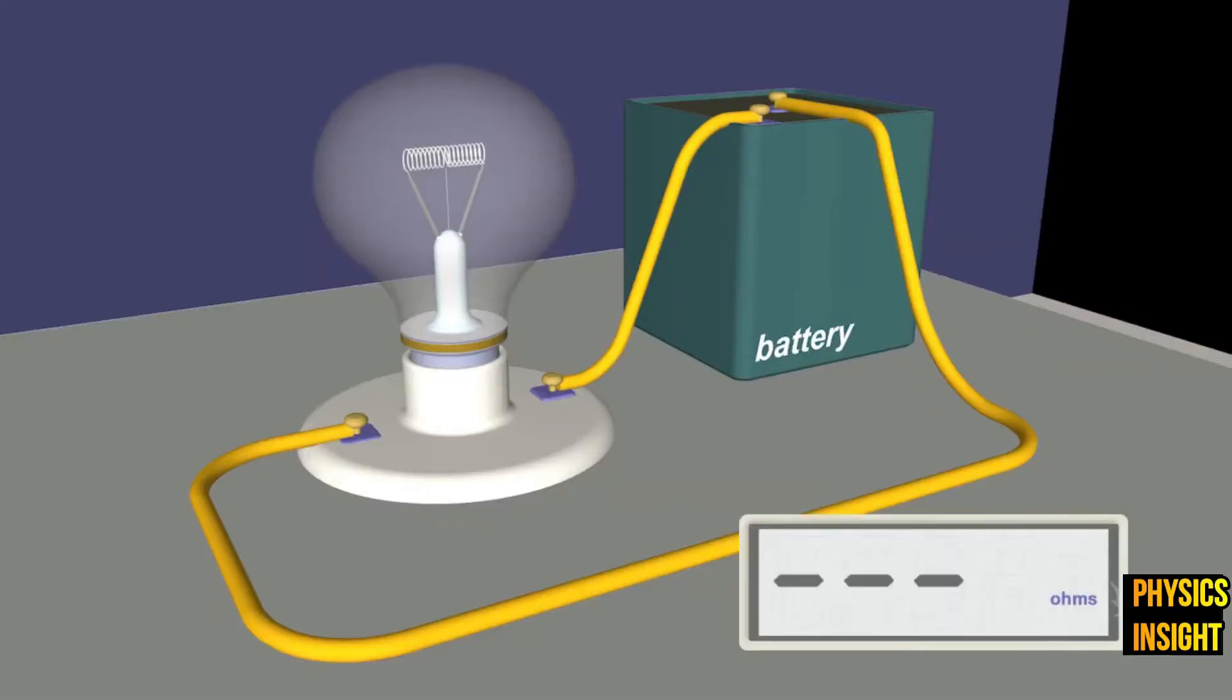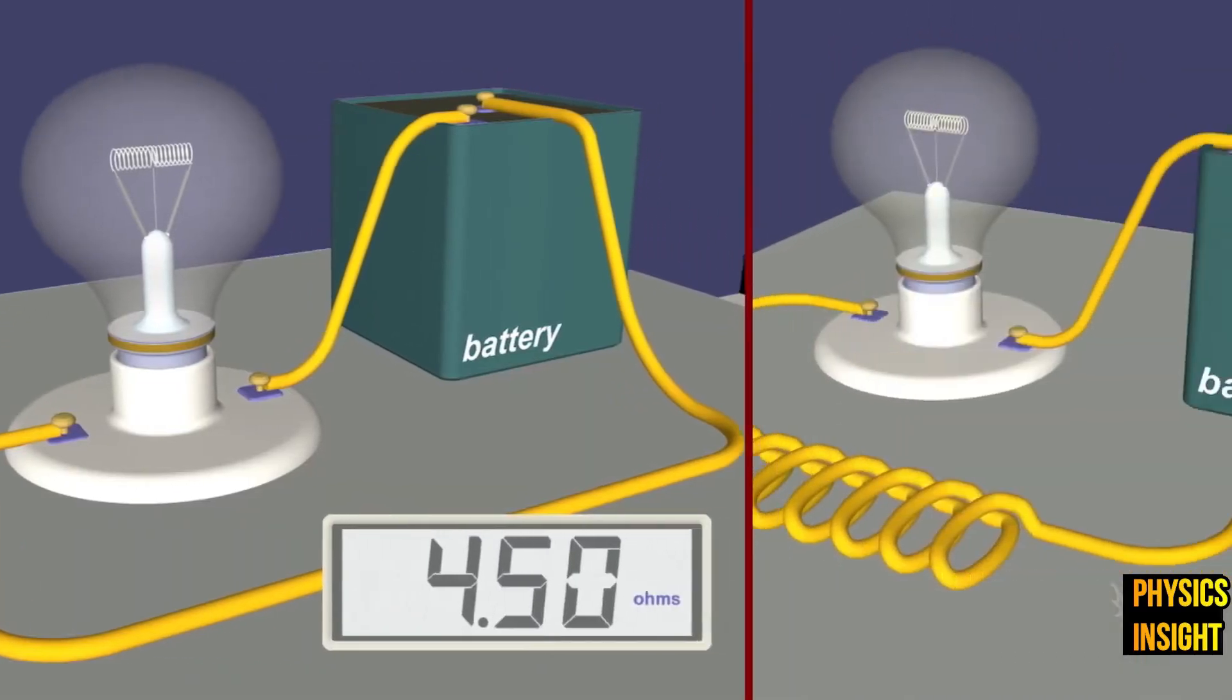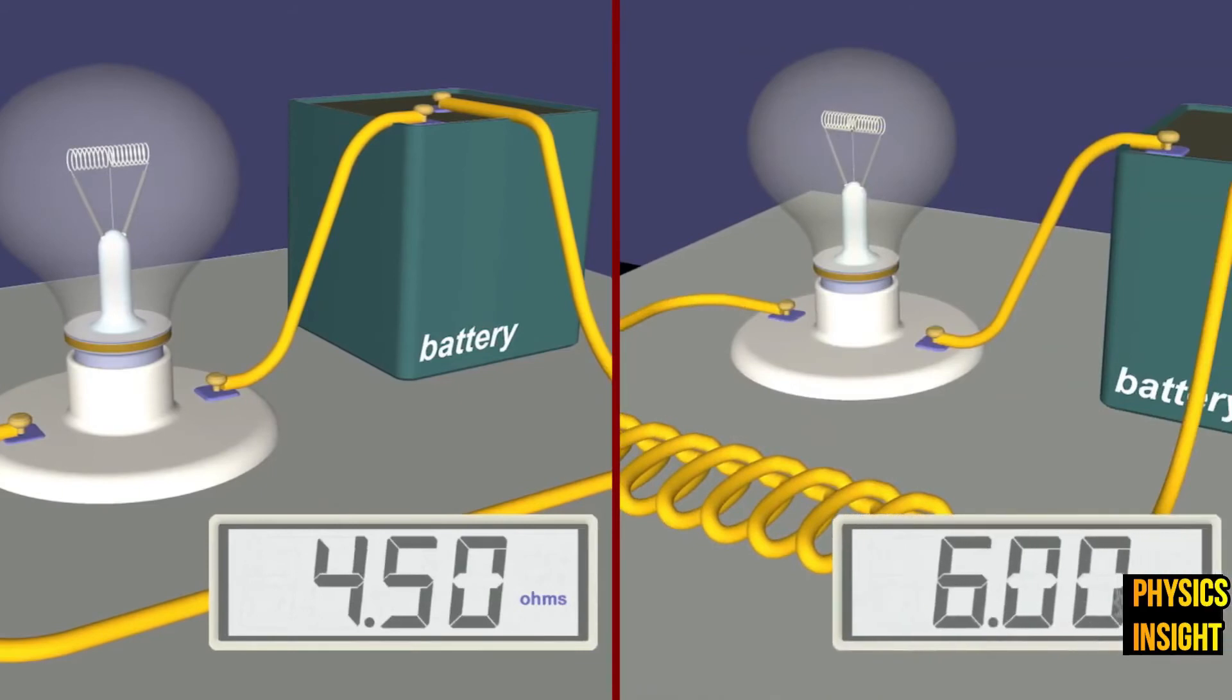Remember, every conductor has some resistance to electricity. When we compare the resistance of the circuits, we see that the extra wire in the second circuit added resistance.